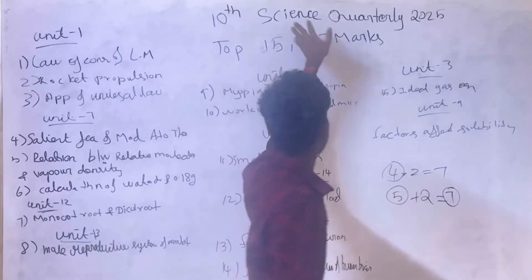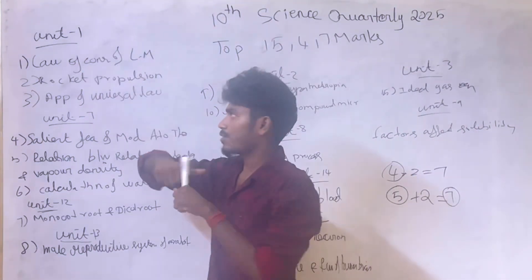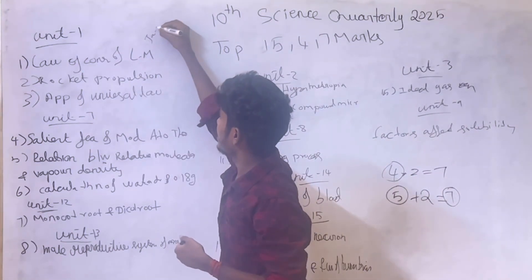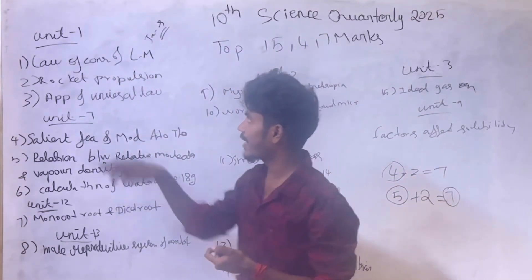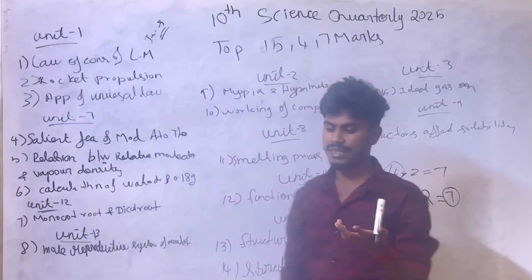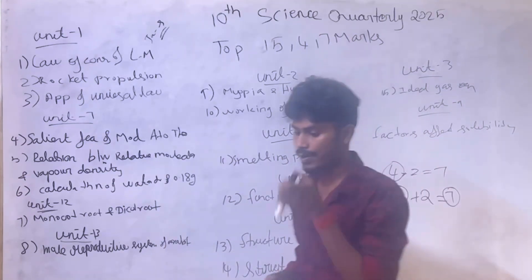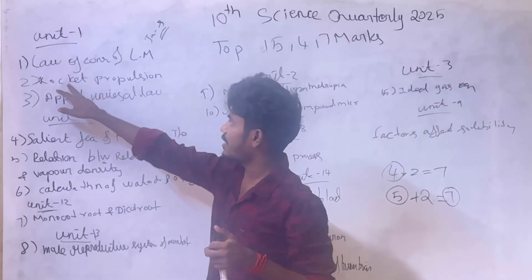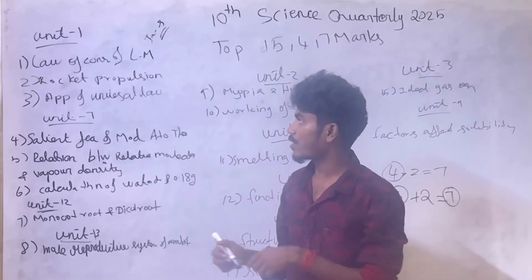First is the test of science. You can do the exam in June or September. Unit 1: law of conservation of linear momentum — state and prove the law of conservation of linear momentum, very very important. Second question: rocket propulsion — very important number question.